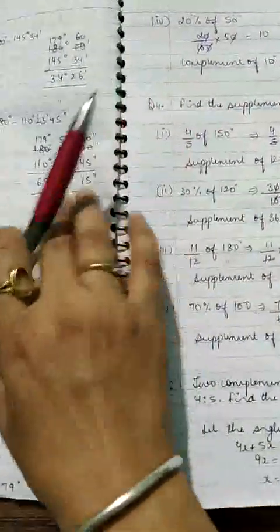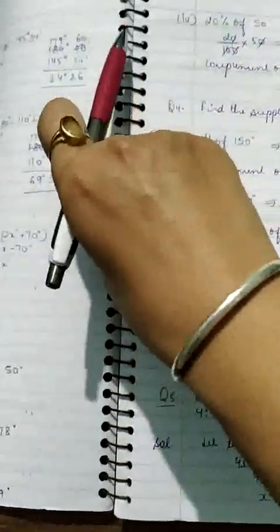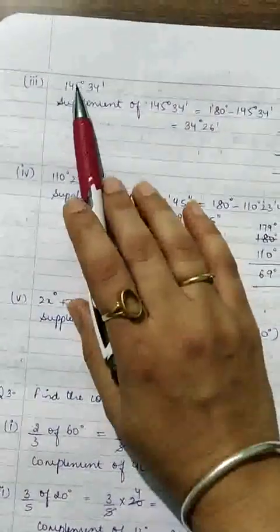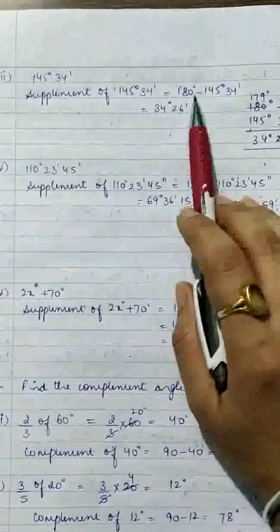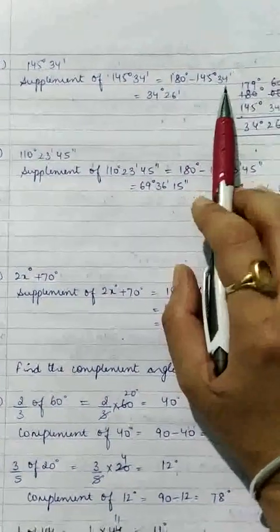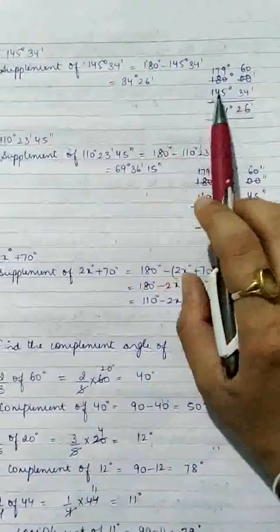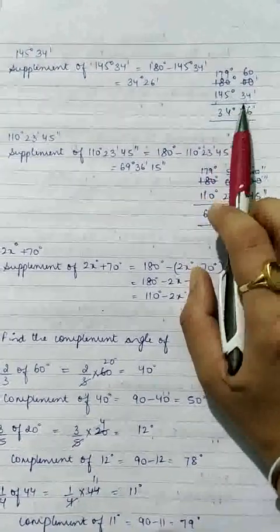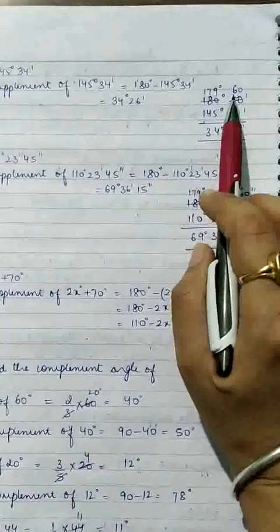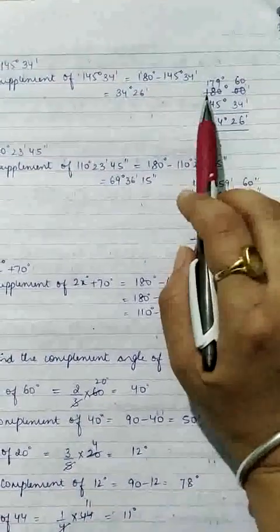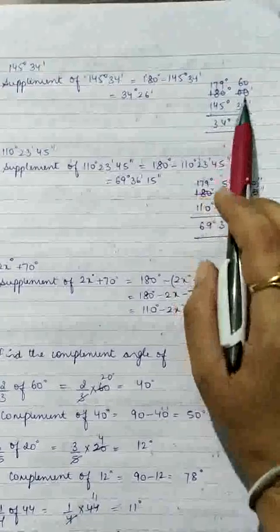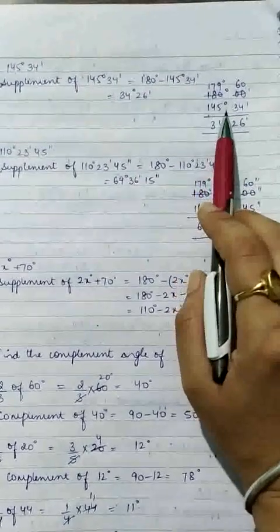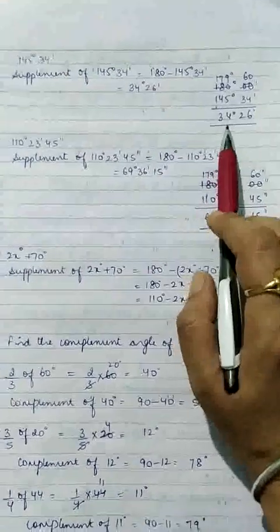Next part: supplementary of 145 degrees 34 minutes. So 180 degrees 00 minutes minus 145 degrees 34 minutes. Borrow 1 degree = 60 minutes; 60 minus 34 is 26 minutes. Then 179 minus 145 is 34 degrees. Answer: 34 degrees 26 minutes.